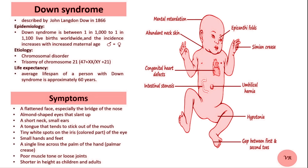Down syndrome was first described by John Langdon Down, an English physician in 1862. He defined a distinct pattern of physical and intellectual characteristics in a group of individuals and published his findings in 1867.